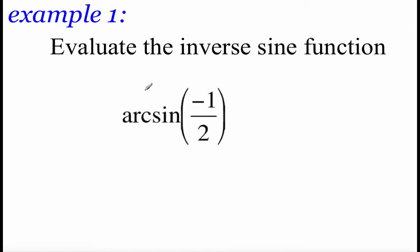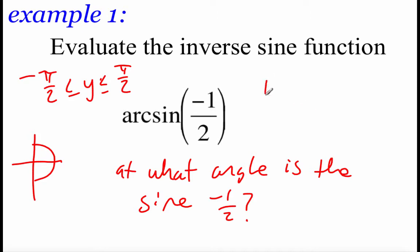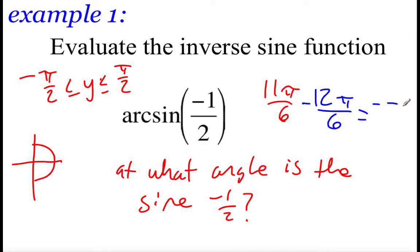So we're going to look at evaluating some inverse sine functions. We've got the arc sine of negative 1/2. Our range gives us answers between negative pi over 2 and pi over 2 — those represent angles on the right-hand side of our unit circle. We're looking for at what angle we have a sine value of negative 1/2. The angle we find is 11 pi over 6 in the fourth quadrant, but that's not between negative pi over 2 and pi over 2. So we use a coterminal angle by subtracting 2 pi: 11 pi over 6 minus 12 pi over 6 gives us negative pi over 6, which is our answer.